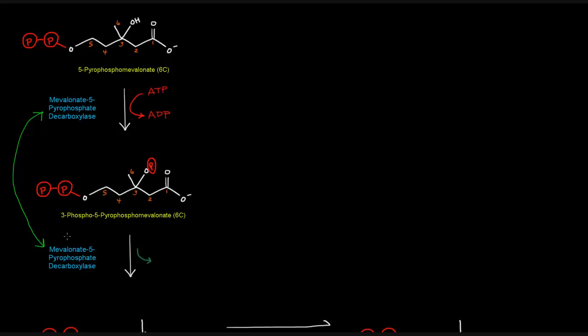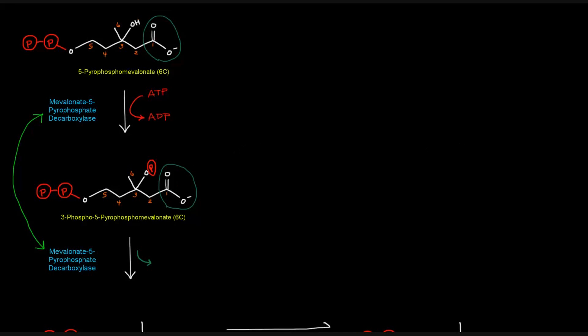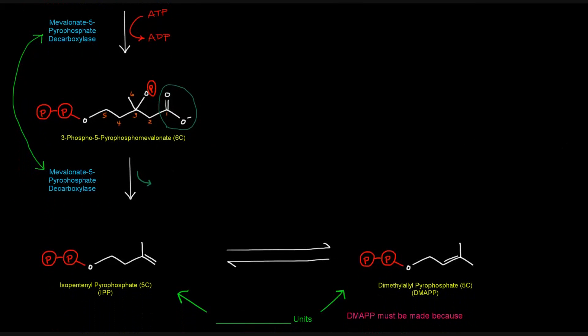It adds that phosphate, and it also catalyzes a decarboxylation step where we'll actually lose this carboxyl group here as a carbon dioxide. So here we make this 3-phospho-5-pyrophosphomevalonate, and then we're going to get rid of that carboxyl group as a carbon dioxide, as well as we're going to lose that phosphate group on the third carbon. And then we have our product here, the isopentenyl pyrophosphate, which is IPP.